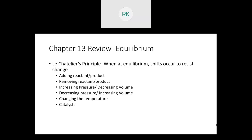For pressure and volume changes: increasing pressure (decreasing volume) shifts equilibrium toward the side with fewer moles of gas. Decreasing pressure (increasing volume) shifts toward the side with more moles of gas. If both sides have equal moles of gas, there is no change in equilibrium.